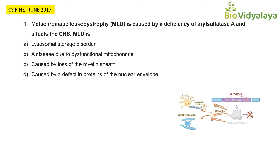To answer this question you should know what MLD is and where aryl sulfatase A is present. MLD is a rare hereditary disease due to the accumulation of fats called sulfatides that build up in cells, particularly in the brain, spinal cord, and peripheral nerves. This is due to the deficiency of the enzyme aryl sulfatase A, which is already given in the question.